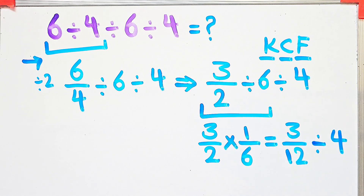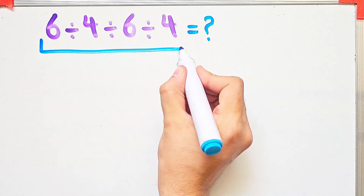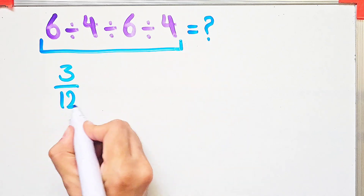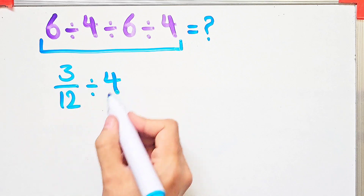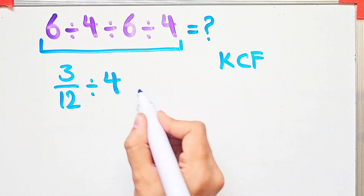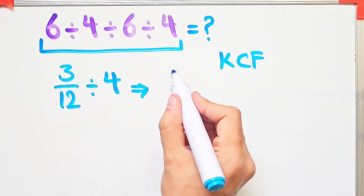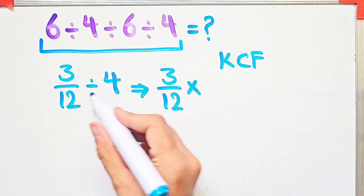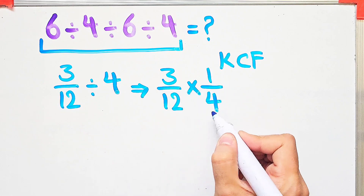The question is now three over twelve, divided by four. Again, to solve this part we need to follow the KCF rule, because we have a fraction divided by a number. According to this rule, we keep the first fraction as it is, after that we change the sign, and after that we flip the second number.